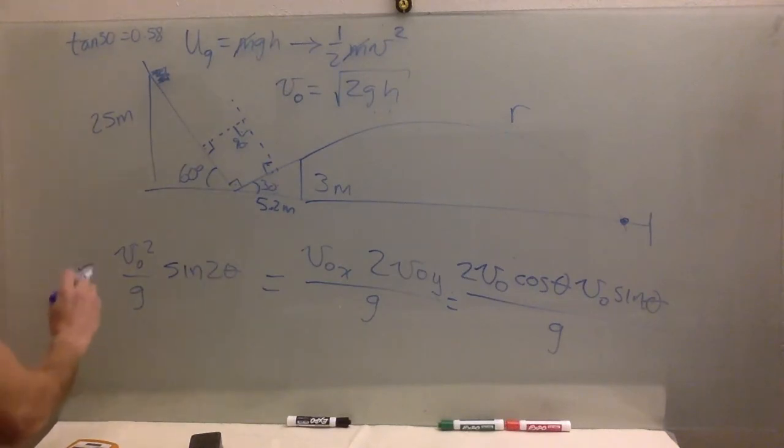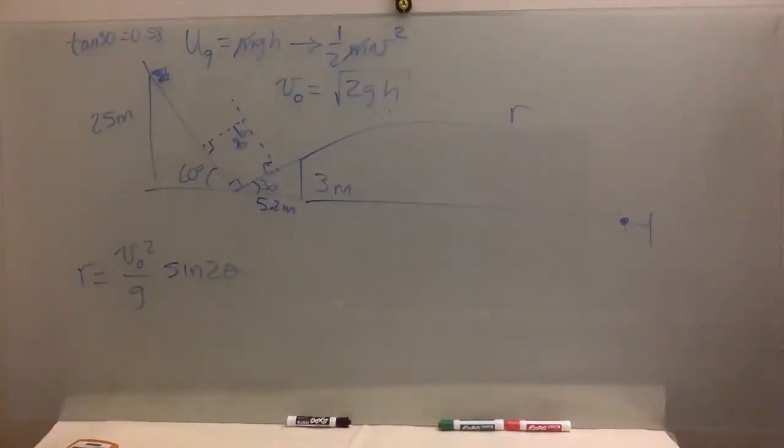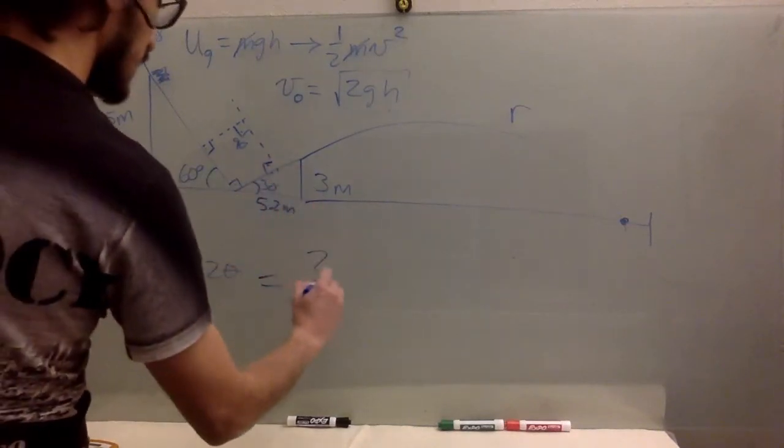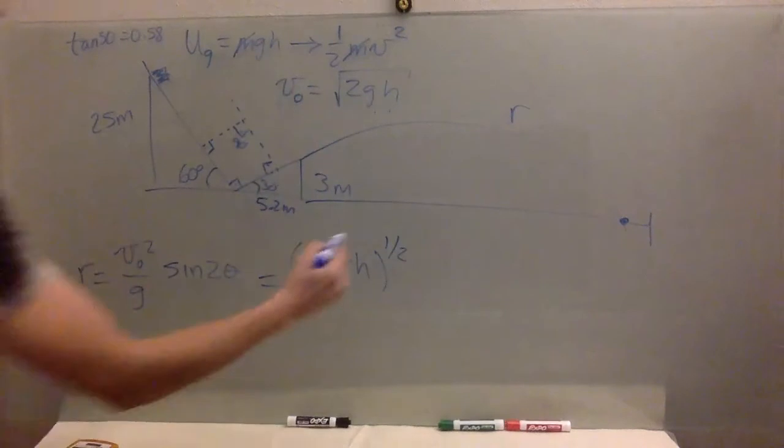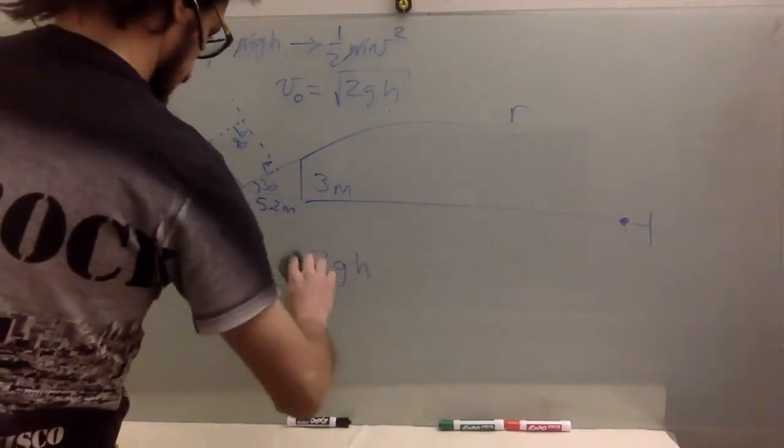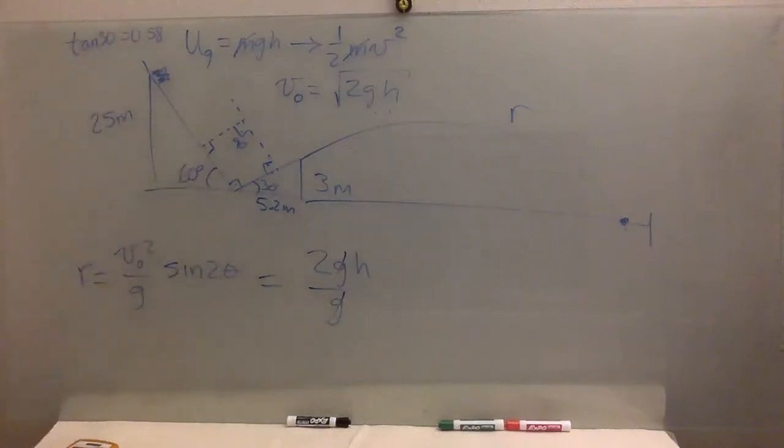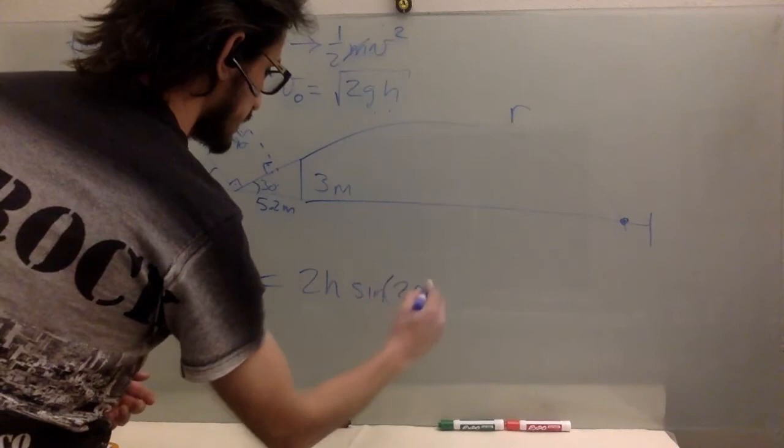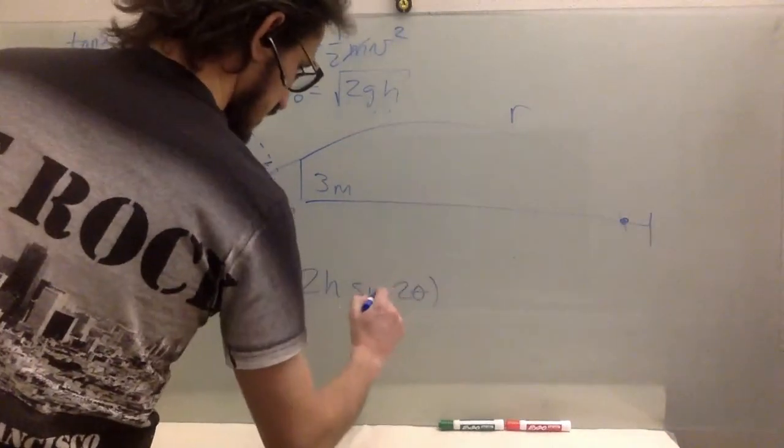So that's the range. And v naught is this, dude. So two gh. And this is to the one half. But this one is squared. So that's just the one half over g. So we can get rid of it. So you just have the two h sine of two theta. And, you know, this is a pretty cool result, I will think. I will call it that way.